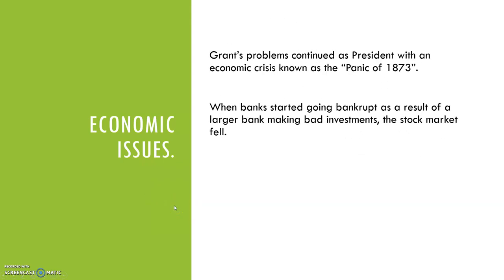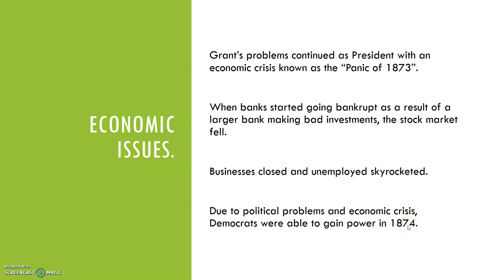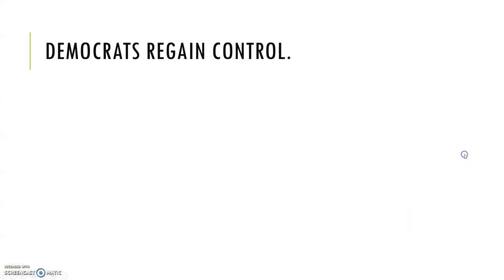There were also economic issues. Grant's problems continued with an economic crisis known as the Panic of 1873. When banks started going bankrupt as a result of a larger bank making bad investments, the stock market fell, businesses closed, and unemployment skyrocketed. Due to political problems and economic crisis, Democrats were able to gain power in 1874.